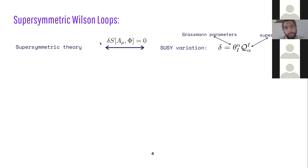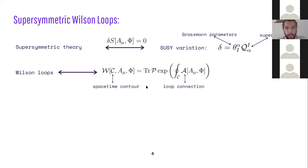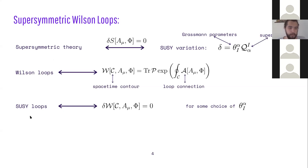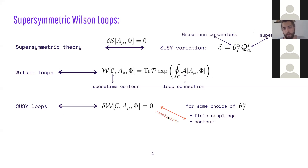Let's look at the definition of a supersymmetric Wilson loop. You start with your favorite supersymmetric theory, which has an action functional depending on a gauge field and matter fields Φ. The theory is invariant under supersymmetric variations with supercharges and Grassmann parameters. A Wilson loop is an operator depending on a spacetime contour, the gauge field, and possibly matter fields, defined as a trace of a path-ordered exponential of a loop connection around that path. Combining these two notions, a supersymmetric Wilson loop is one annihilated by a supersymmetric transformation for some choice of supercharges — it need not be annihilated by all of them. This constrains how the Wilson loop couples to the fields and also constrains the contour.